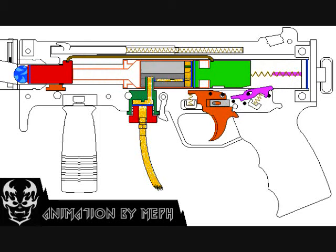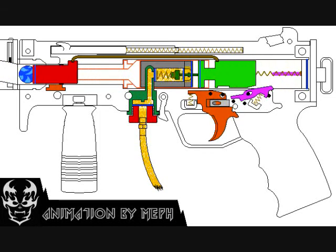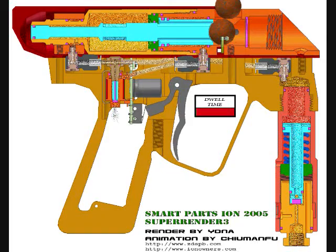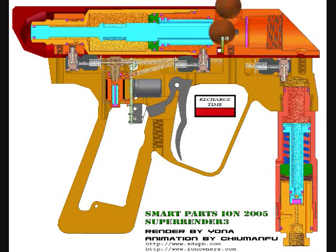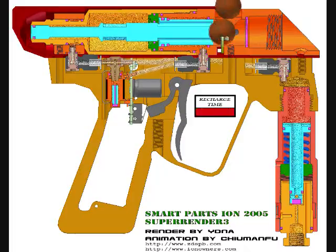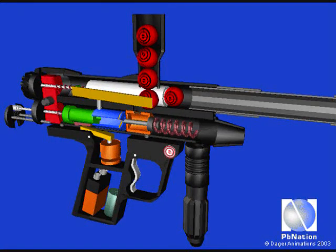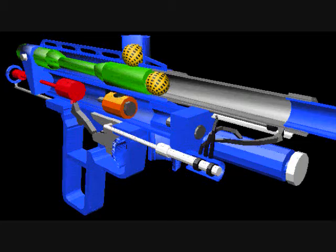I want to talk about how the paintball gun works and how the paintball is propelled out of the barrel. In our barrel of the gun, there's something called the valve tube. This valve tube runs through the bolt, spring, and hammer to the gas inlet valve. Our tank of compressed air is connected to the gas inlet valve to provide the propulsion needed to expel the paintball.